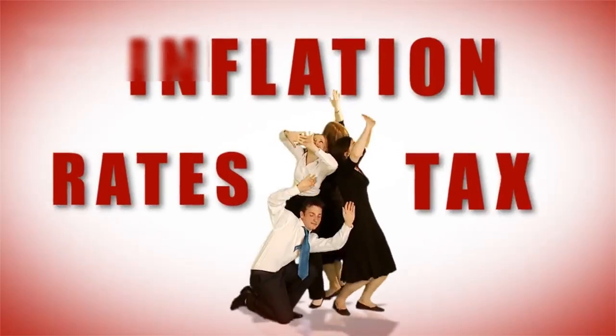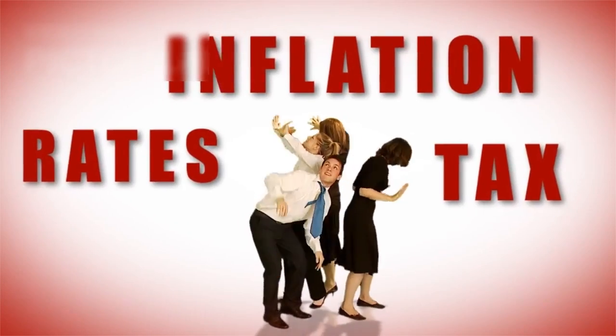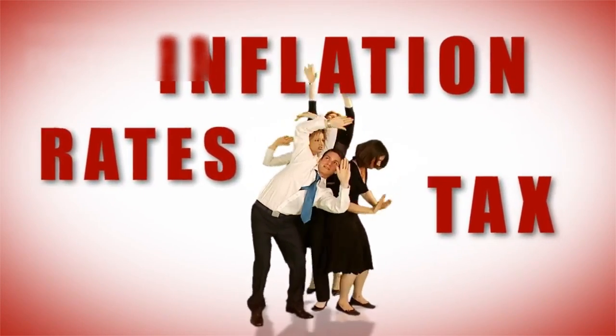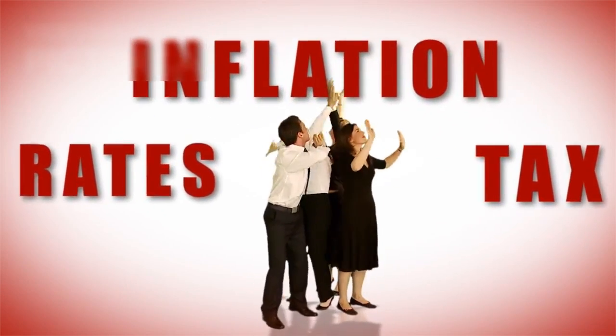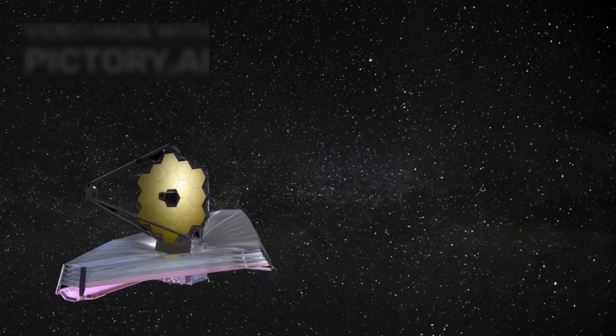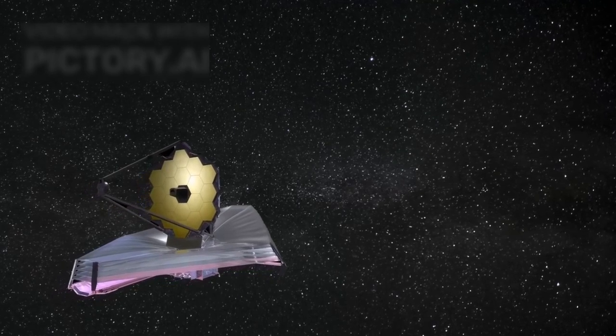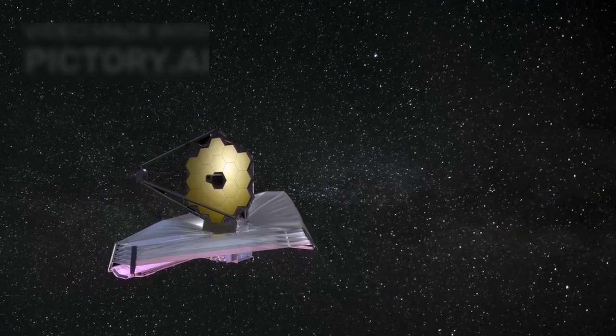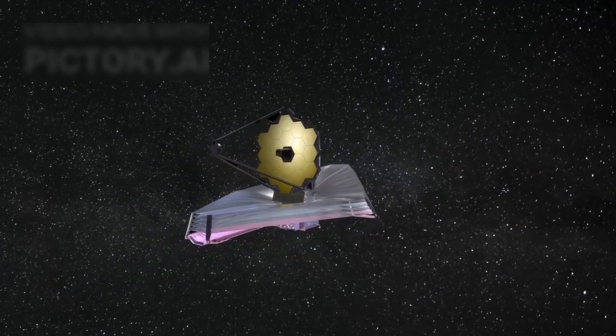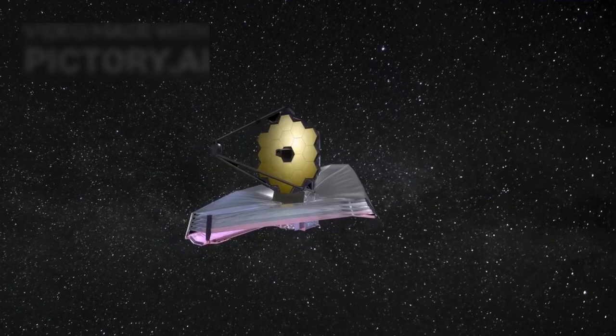The James Webb Space Telescope has revolutionized our understanding of these mysteries by capturing breathtaking images of the universe's most ancient and distant objects. Its mission is to detect the faint light emitted by the first stars and galaxies that formed after the Big Bang. Since its launch, it has exceeded expectations, capturing stunning images of galaxies formed just a few hundred million years after the Big Bang and even the earliest stages of star formation.